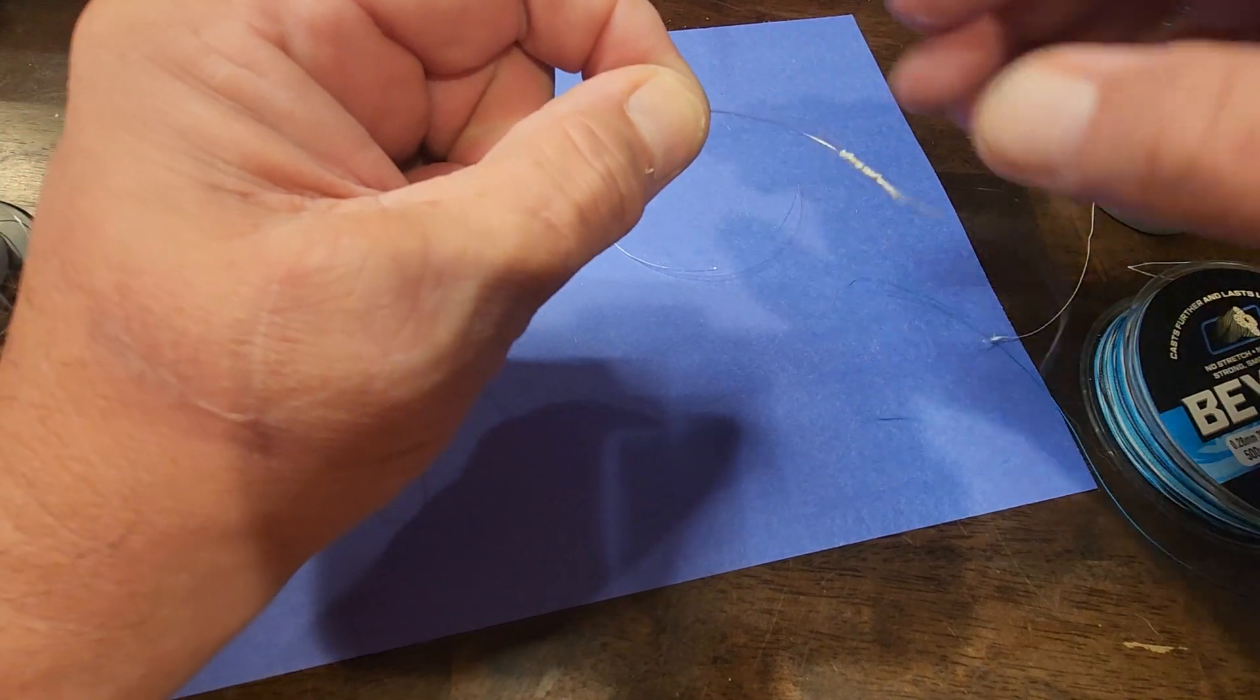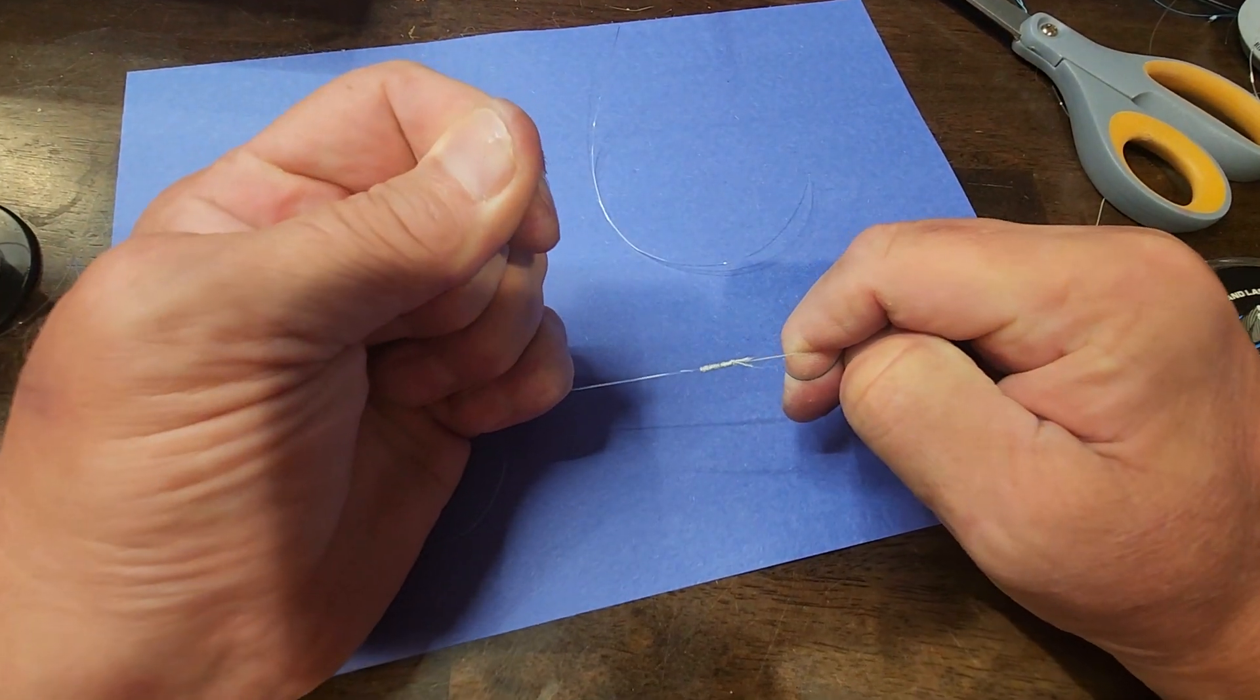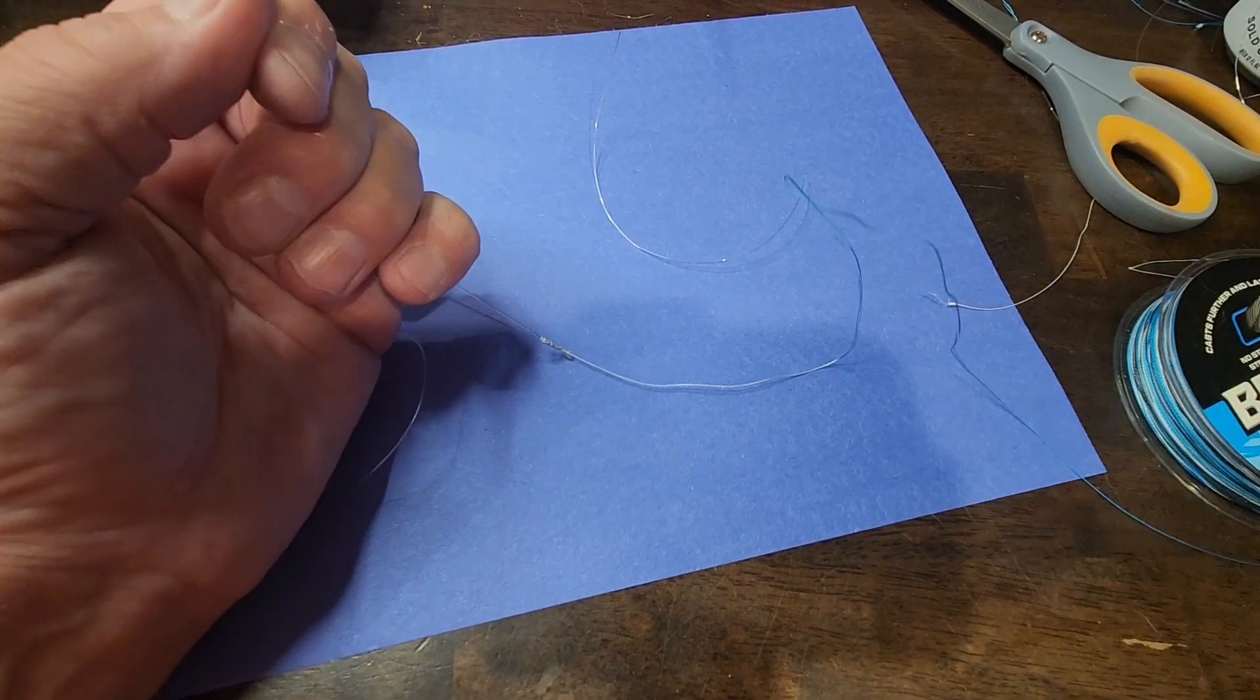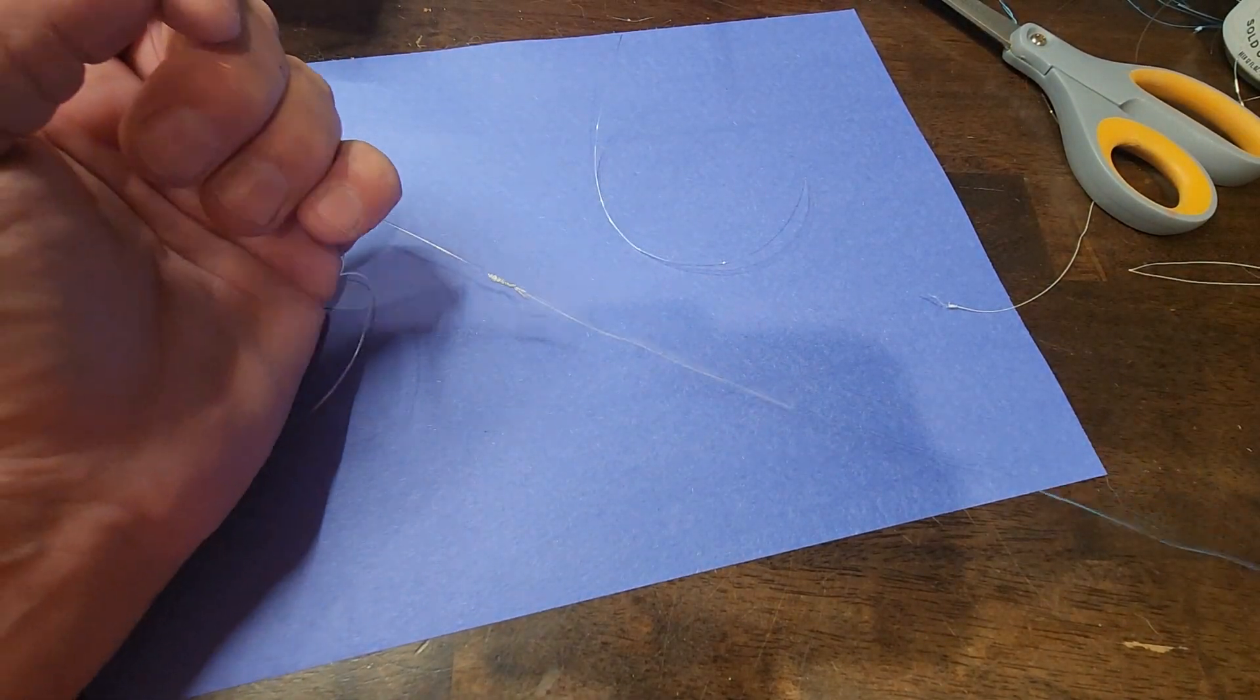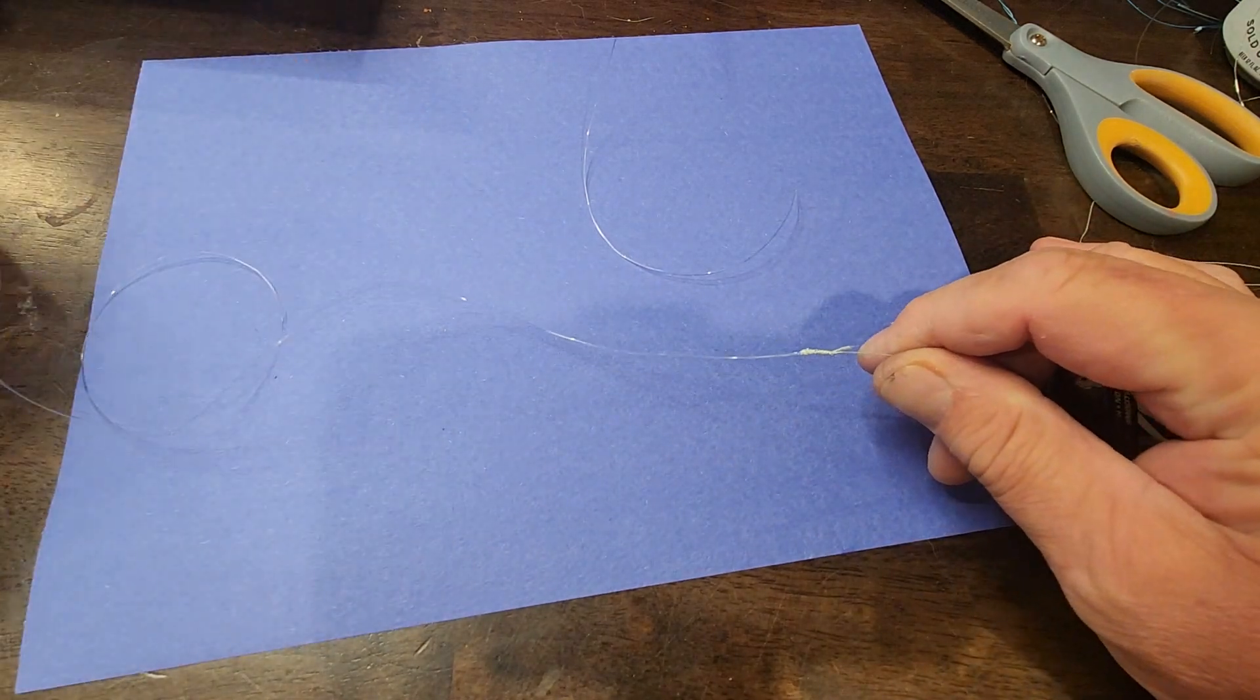What you've got here is a nice clean knot. And I want to show you something. I'm gonna do a nice clean 30 pound braid, 20 pound mono.